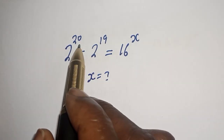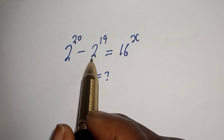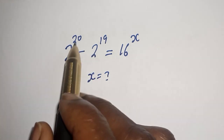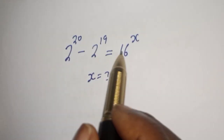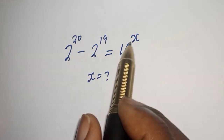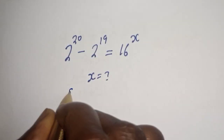Hello, welcome to Manji's. In this class we want to find the value of x from this equation: 2 raised to power 20 minus 2 raised to power 19 is equal to 16 raised to power x.